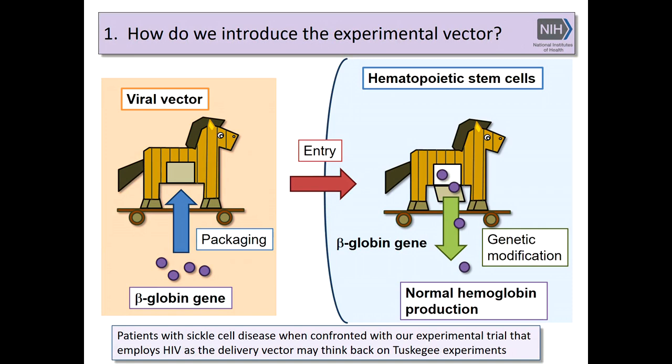The next question I encountered was: how do we introduce the experimental vector? We use HIV-1 as the backbone for the vector to transfer the gene to these cells — we make it into a Trojan horse to move the gene into the hematopoietic stem cell. But patients with sickle cell disease confronted with our experimental vector, HIV, may think back on the Tuskegee experiments — a PHS-sponsored trial that followed individuals with syphilis over a lifespan without treating them, even when penicillin was available. The bottom line is it takes a lot of education in the patient population and long-term follow-up in a setting where they are getting care from physicians they trust.